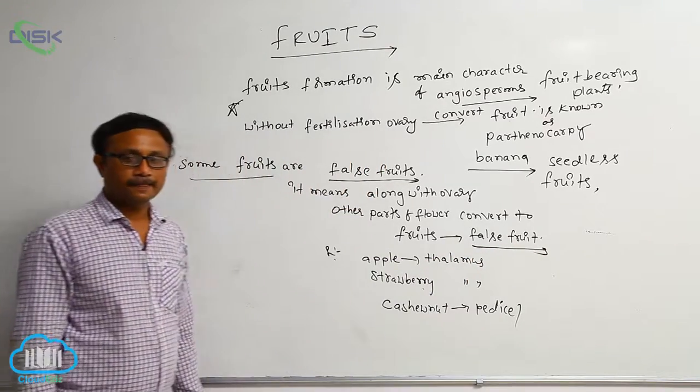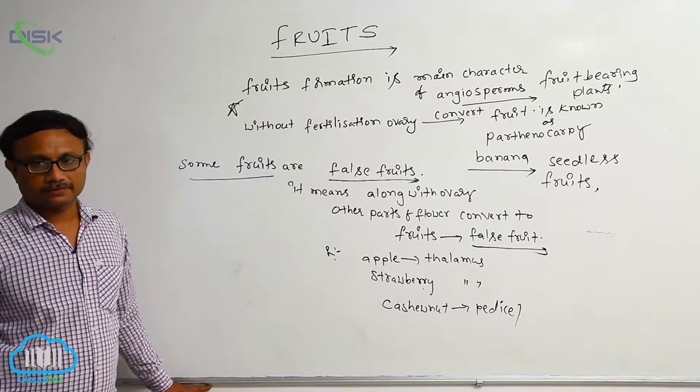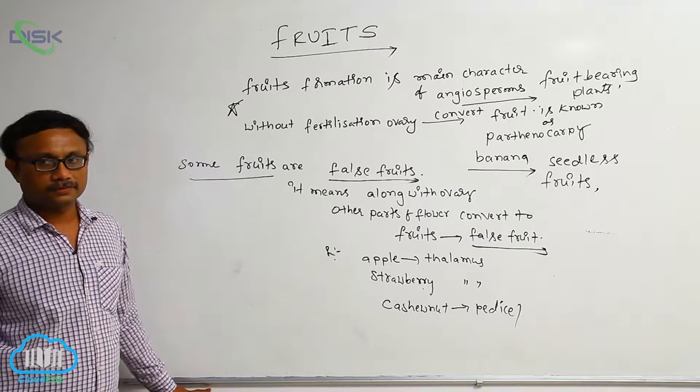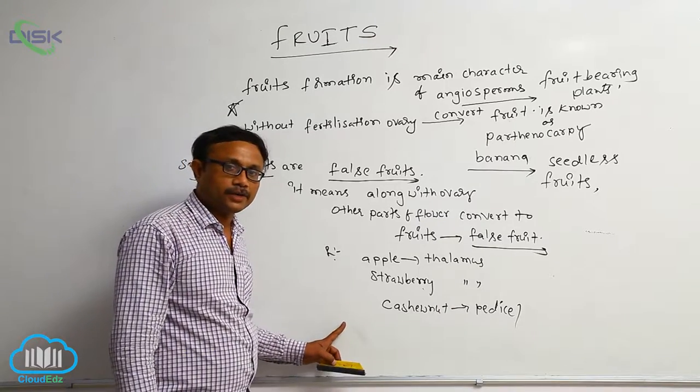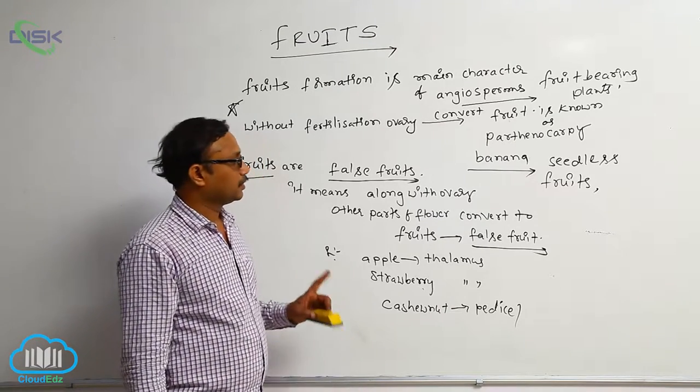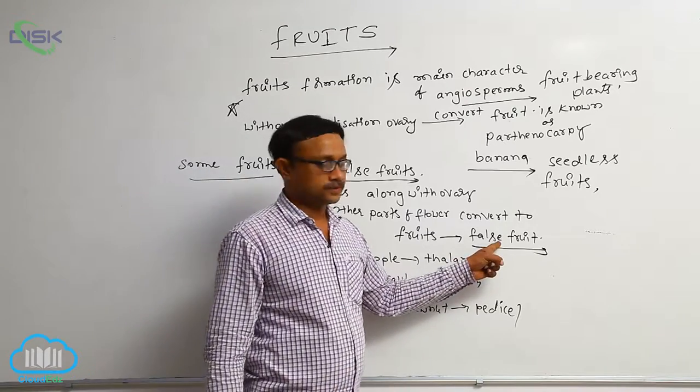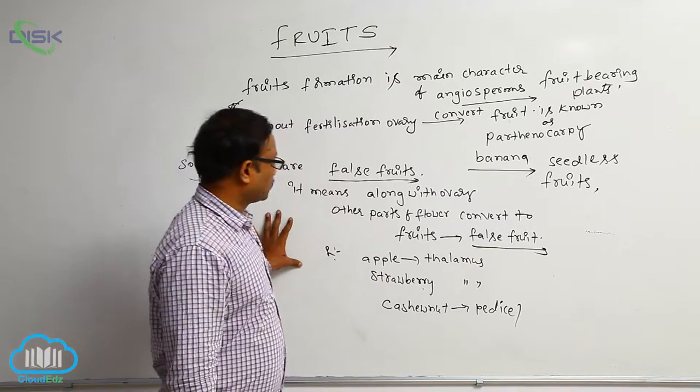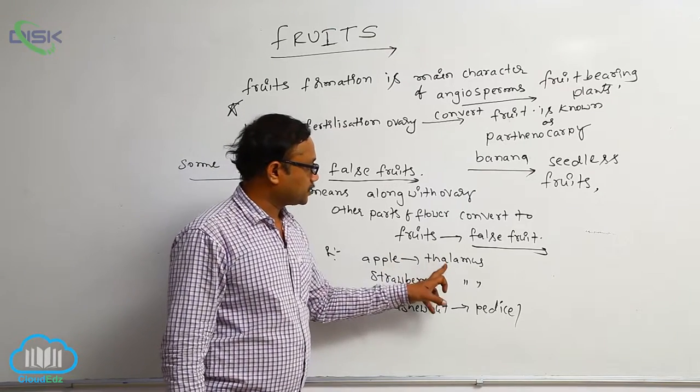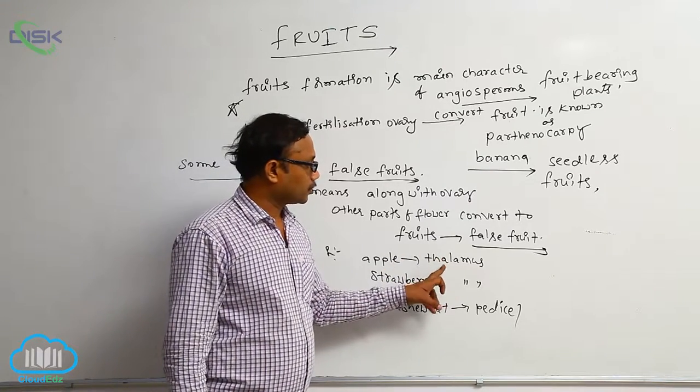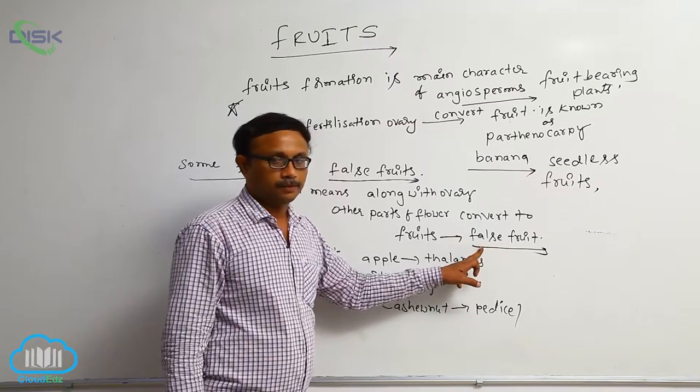Generally, ovary converts into fruit. That is known as a true fruit. Along with ovary, if other parts also convert during fruit formation, that is known as a false fruit. In false fruit example: apple. In apple, thalamus is converted into the fruit. So that is known as a false fruit. Important objective bit.